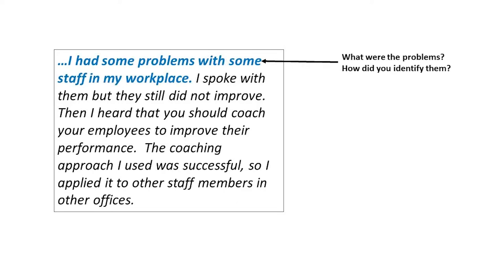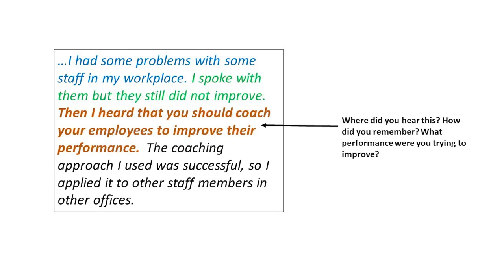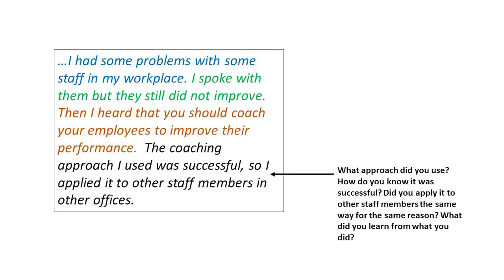To break down this example: first of all, the problems aren't clear — you say there are problems but they're not explained. You talk about speaking with the employee but it doesn't say what you said or how you said it. It doesn't explain how you selected coaching and what aspect of coaching was used to improve the performance. The outcomes say they were successful but it's not clear how this was achieved and what would be learned from the experience.